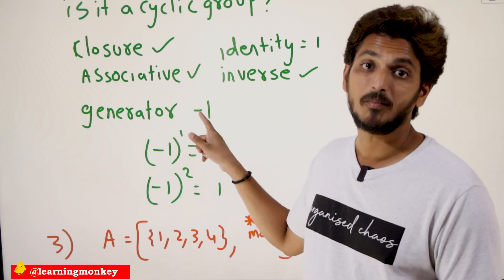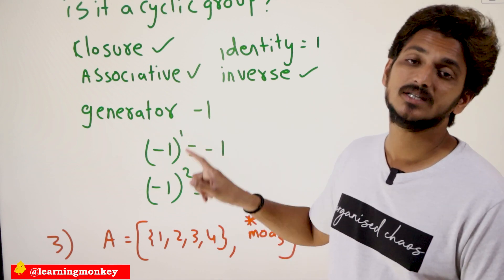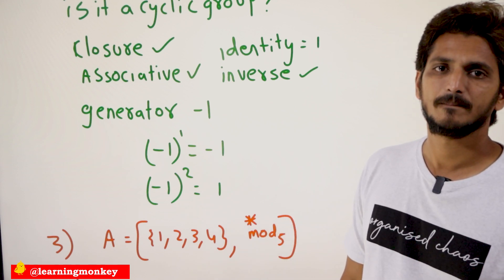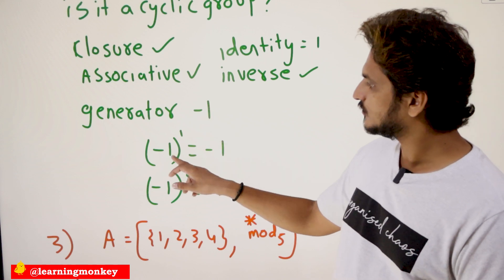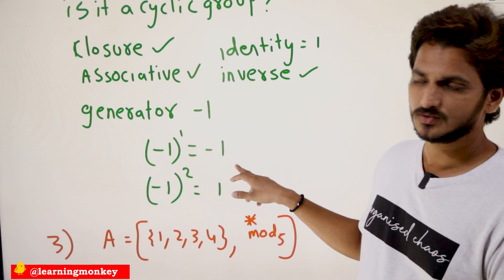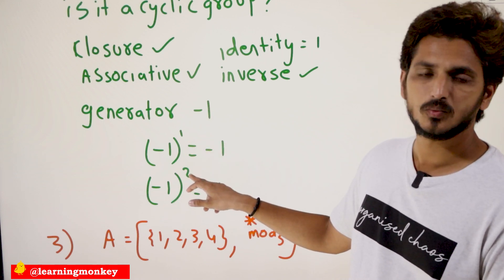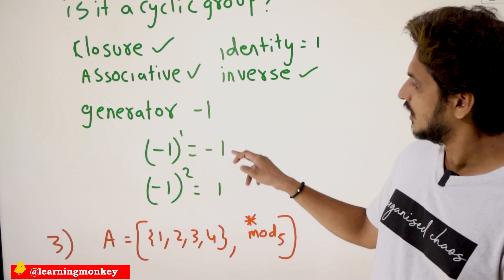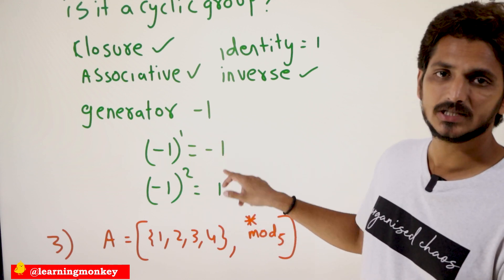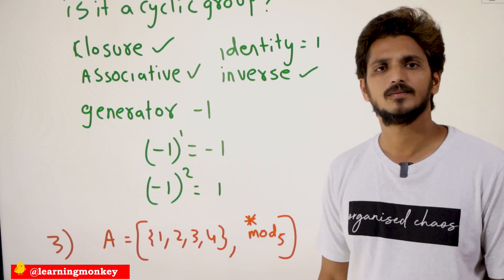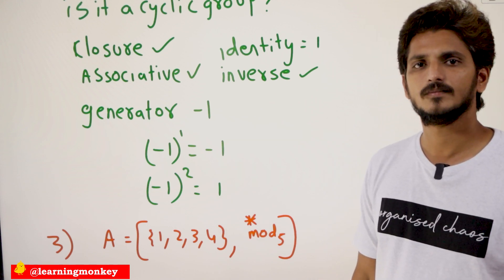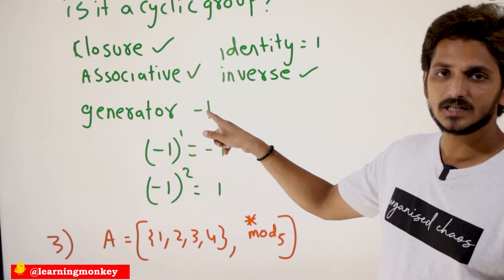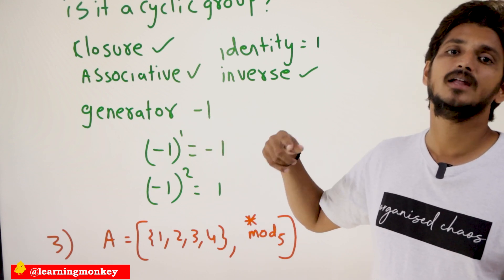The generator element here is -1. (-1)^1 = -1, and (-1)^2 = (-1) × (-1) = 1. We generated both elements: -1 and 1. So we have a generator element -1, and we can call this a cyclic group.